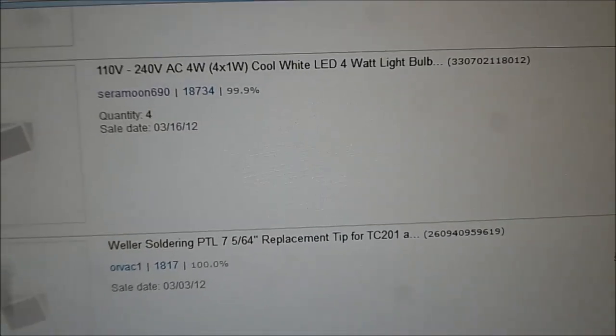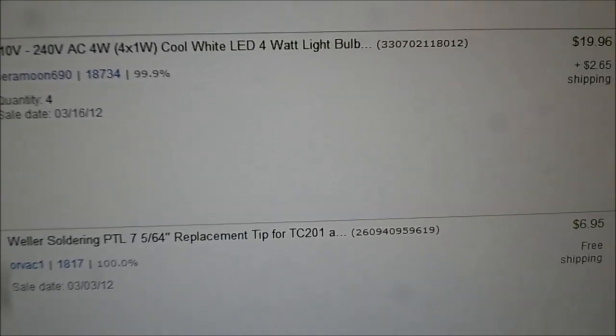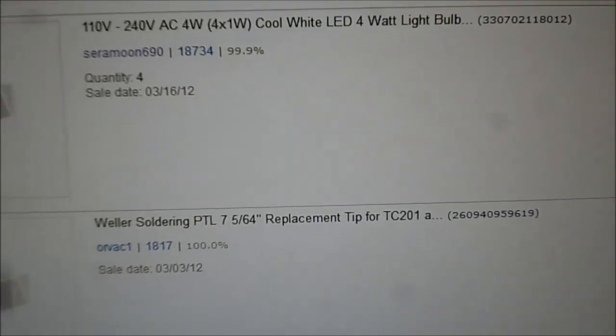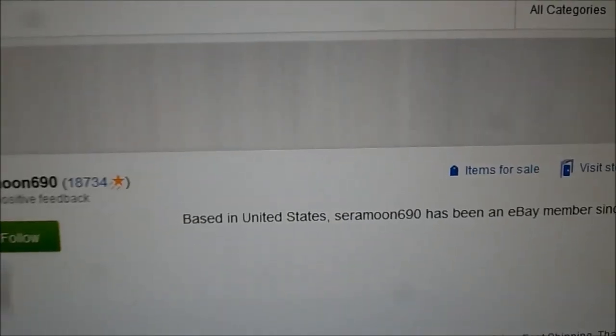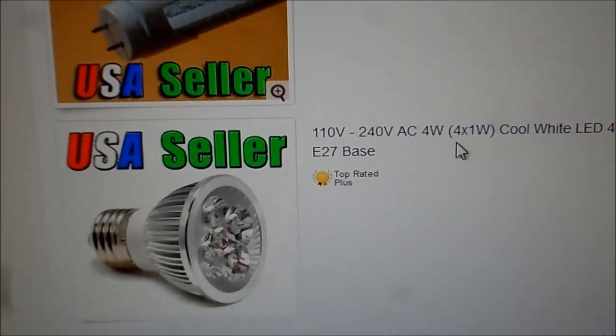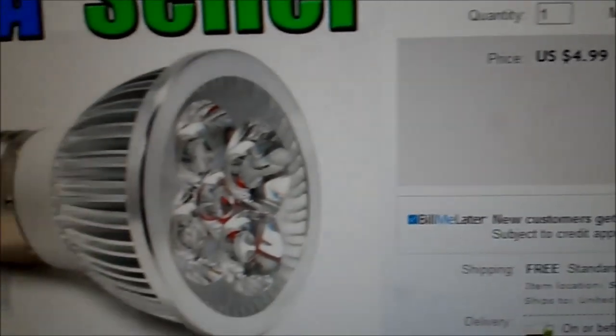A little over a year ago in March, I bought four 4-watt cool white LED light bulbs for about five dollars each. I searched them out, and they're 1-watt, 4-LED lights. I came home tonight and the porch light was out.